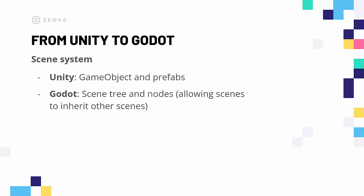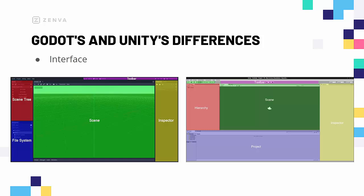Another key difference is the scene system. Unity uses game objects and prefabs, while Godot uses a scene tree and nodes, allowing scenes to inherit other scenes. Game objects in Unity are called nodes in Godot, and the hierarchy works a little differently. In terms of interface, both engines are still quite similar — the hierarchy (called the scene tree in Godot) is on the left, the scene view is in the center, the inspector is on the right, and the toolbar is at the top.